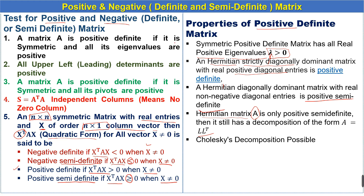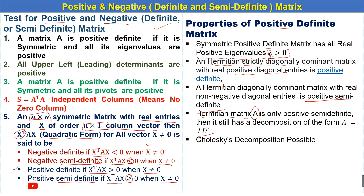These are the properties of positive definite matrices and the five tests to identify whether a matrix is positive or negative definite or semi-definite. In the next lecture we will solve five examples, one related to each test. Thank you so much for watching. Please subscribe to the channel Scientific Math for more videos related to mathematics.